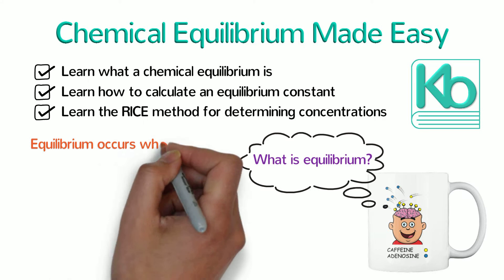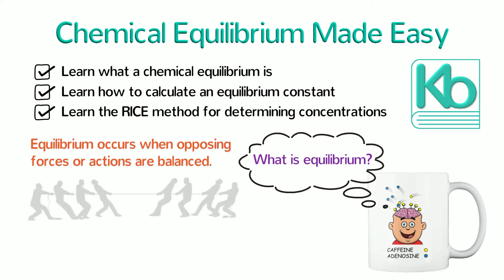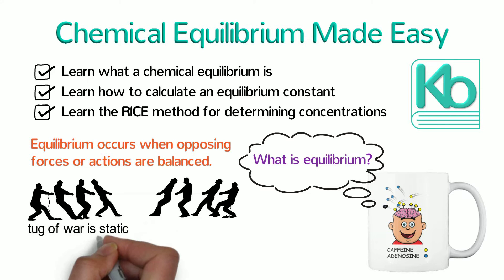Equilibrium occurs when opposing forces or actions are balanced. It's kind of like a tug of war when the two sides pull equally. Nobody goes anywhere even though they are pulling with a lot of force. But tug of war is a static equilibrium.